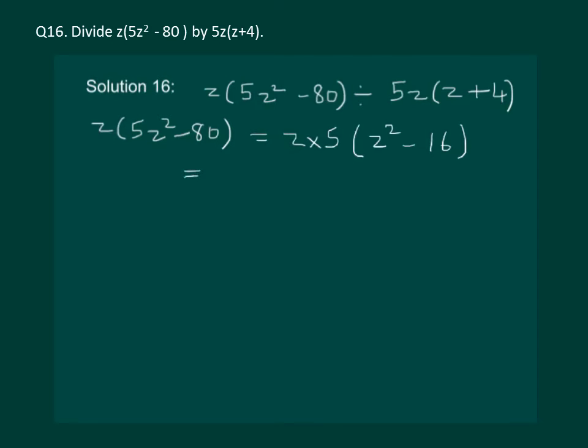This can also be written as z into 5 into z square minus 4 square.